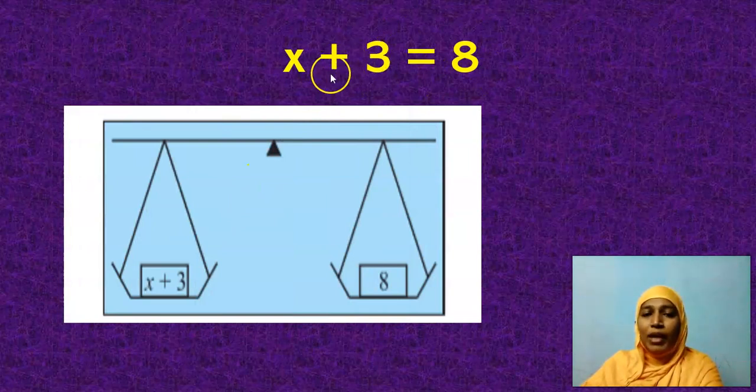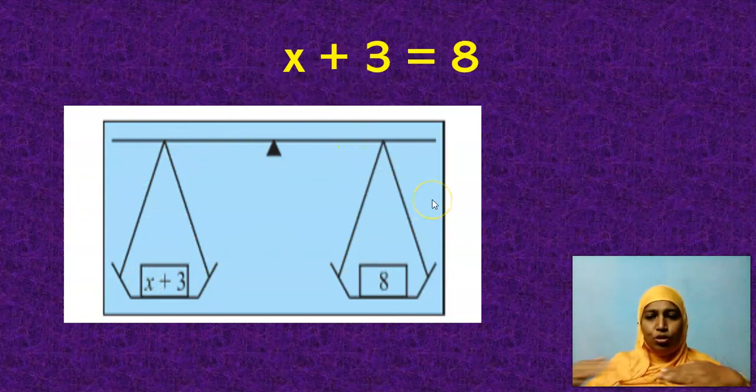Here I have placed it in a physical balance. Equation is like a balance, my dear children. Left hand side and right hand side should always be equal. Should be well balanced. It should maintain, we should maintain the balance. Here I have to find the value of X. What should I do now?